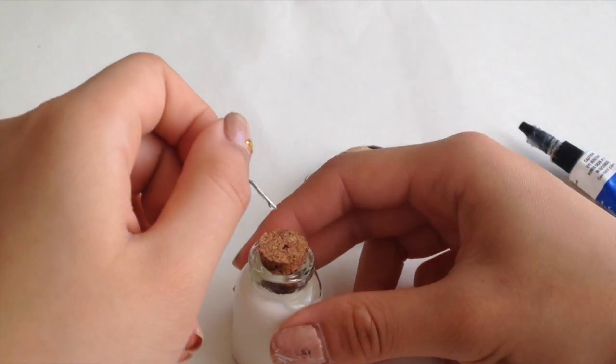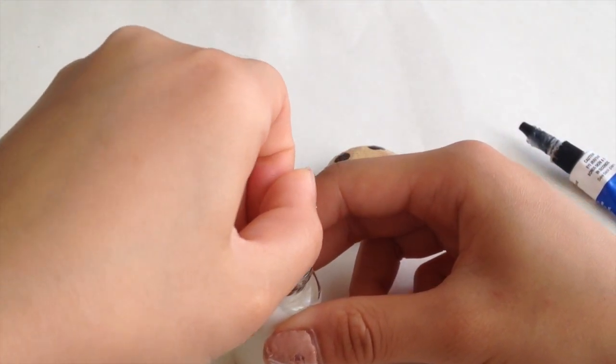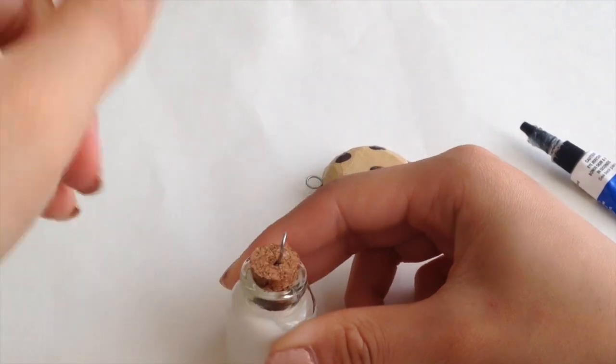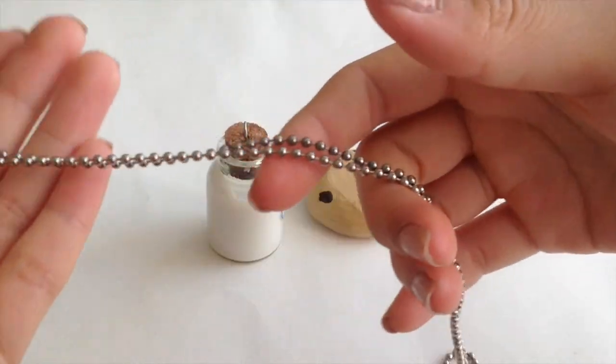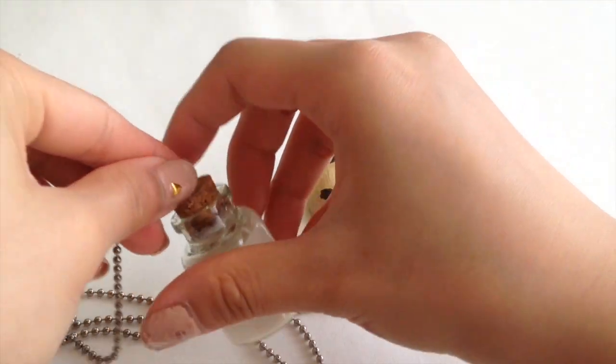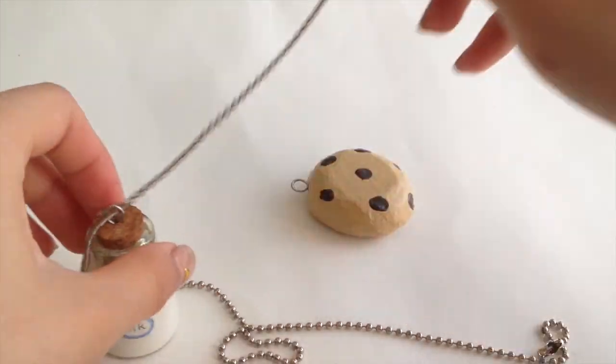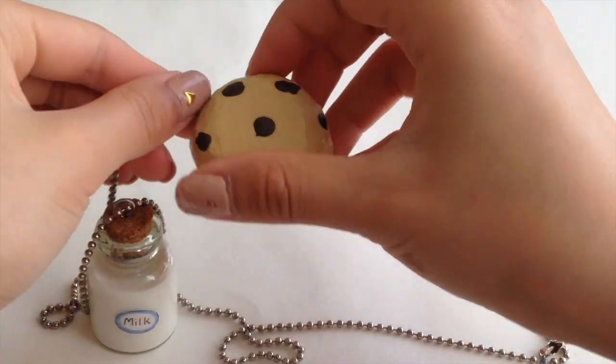And now I am going to do the same for the milk of course. So now just string the two together with a ball chain. I chose to use a long ball chain because I just thought it looks really cute like that.